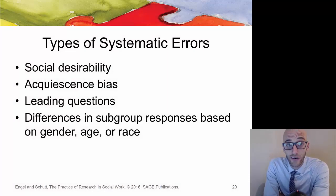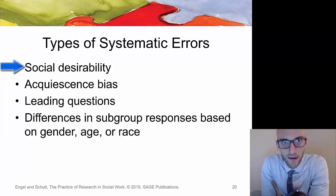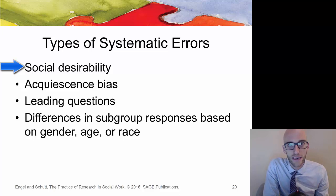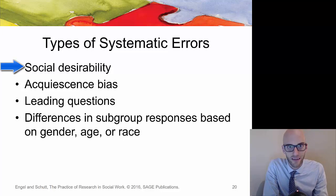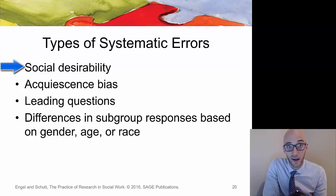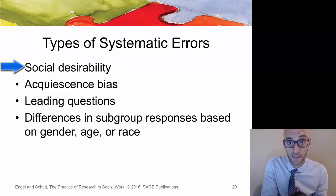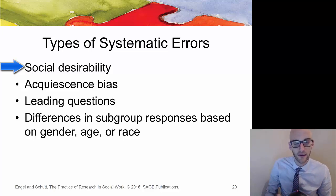Among the systematic errors we can address is social desirability — the desire to be perceived positively. Think about somebody who might not want to talk about their substance use history or trauma history, or who just wants to be perceived in a positive light. In social work there are probably many people uncomfortable discussing personal histories, and this can lead to systematic errors. Ways to address this include training the data collector to be more sensitive about how they ask questions, or rewording questions to be less intimidating.